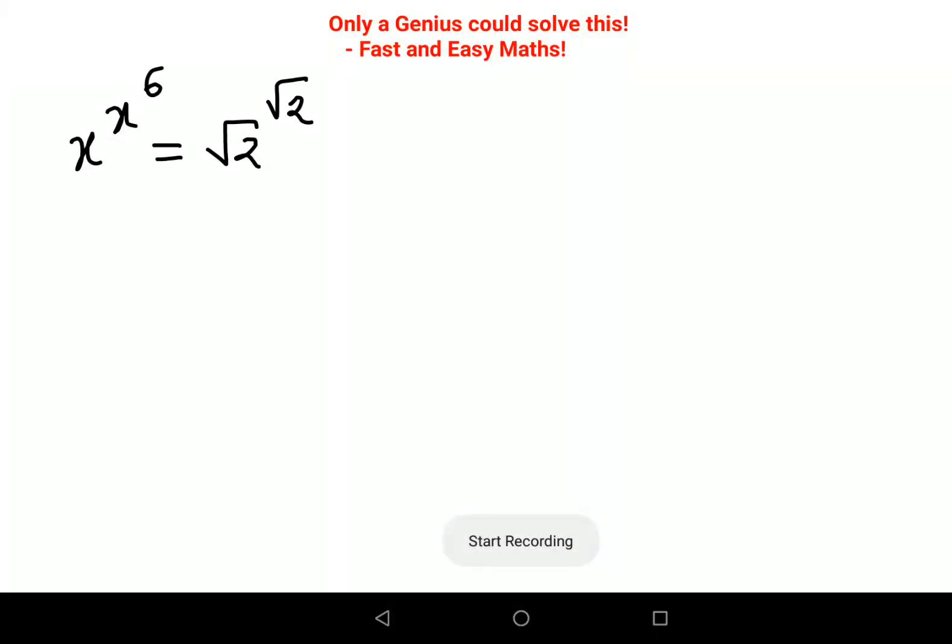Welcome everyone. Today we are going to solve a question which looks very tricky, but trust me, only a handful of people could figure it out by just using a little bit of logic in the first two steps. First, what you have to try is to make your LHS look like your RHS. We'll try to write it in the form of same base and same index.